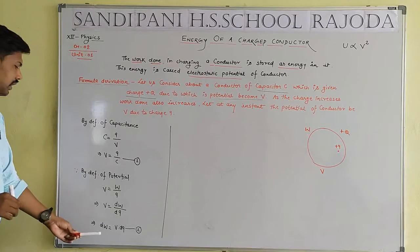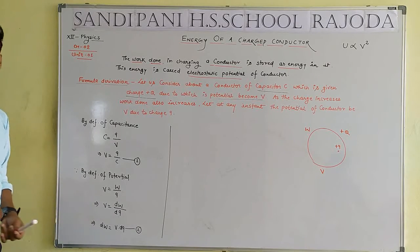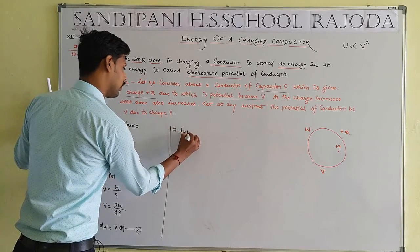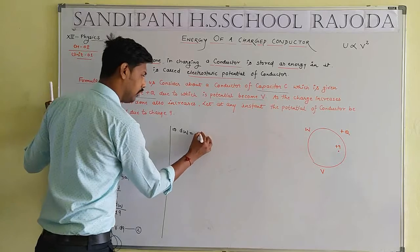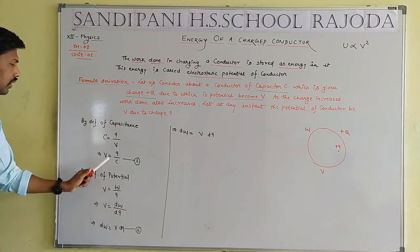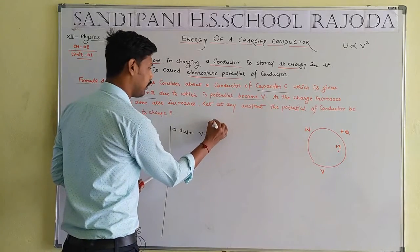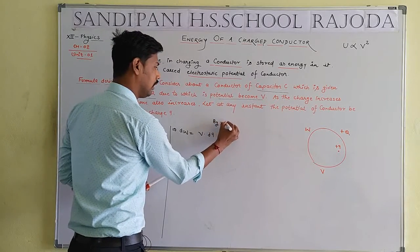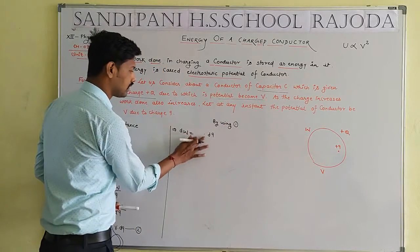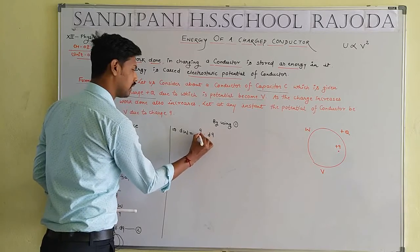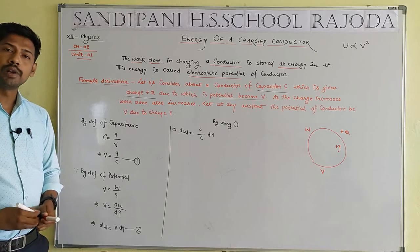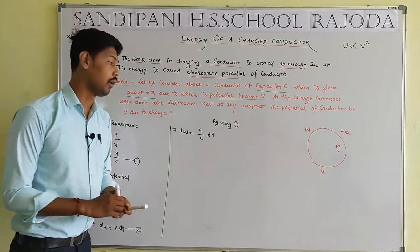By use of Equation Number 2: dW equals V into dQ. Now we replace the value of potential V using Equation Number 1. By using Equation Number 1, V is replaced by Q by C. So dW equals Q by C into dQ. But dW is a small amount of work done; we need to calculate the net total amount of work done.